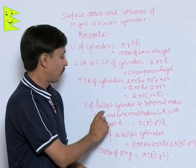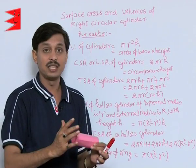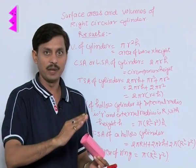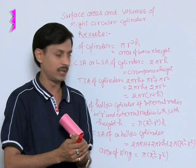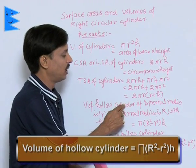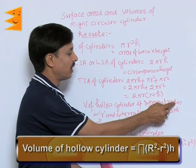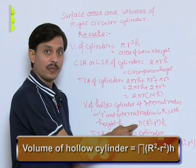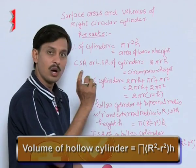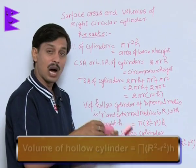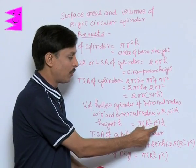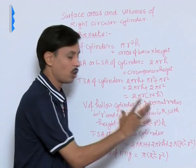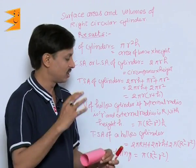The volume of a hollow cylinder — a cylinder with thickness — where internal radius is r and external radius is R, with height h, is given by π(R² − r²)h. This volume, when multiplied by the given density, gives the weight of the material used to make the cylinder.